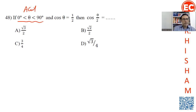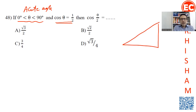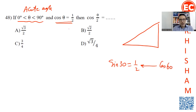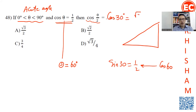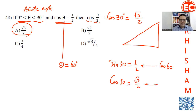Question 48: Theta is greater than 0 and less than 90 degrees, so it's an acute angle — all trig functions are positive. Sine of theta equals 1/2. We know sine 30 equals 1/2, so theta equals 30 degrees. We want cosine of (theta over 2), which is cosine 15 degrees. Wait — sine equals half means theta is 30, so cosine of theta over 2 is cosine 15. Actually, since sine 30 equals 1/2 and cosine 60 also equals 1/2, theta equals 60, so we want cosine 30, which equals root 3 over 2.